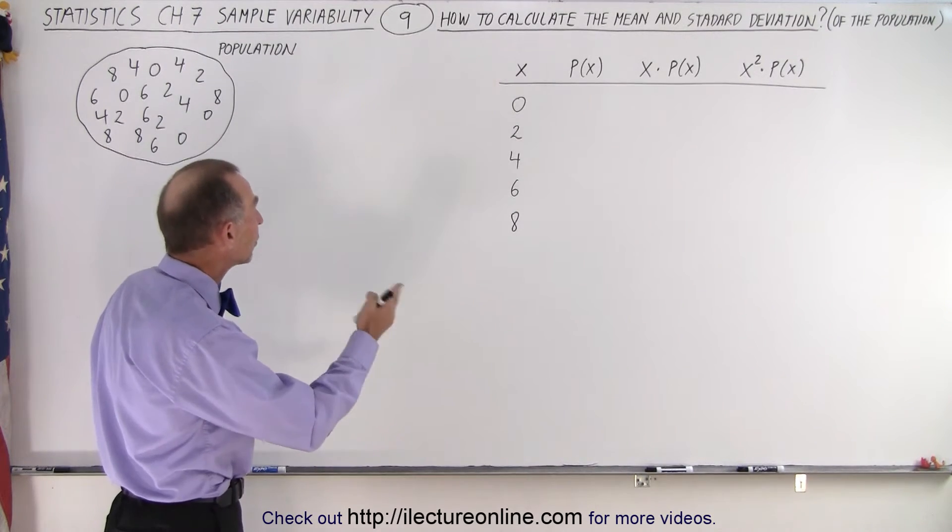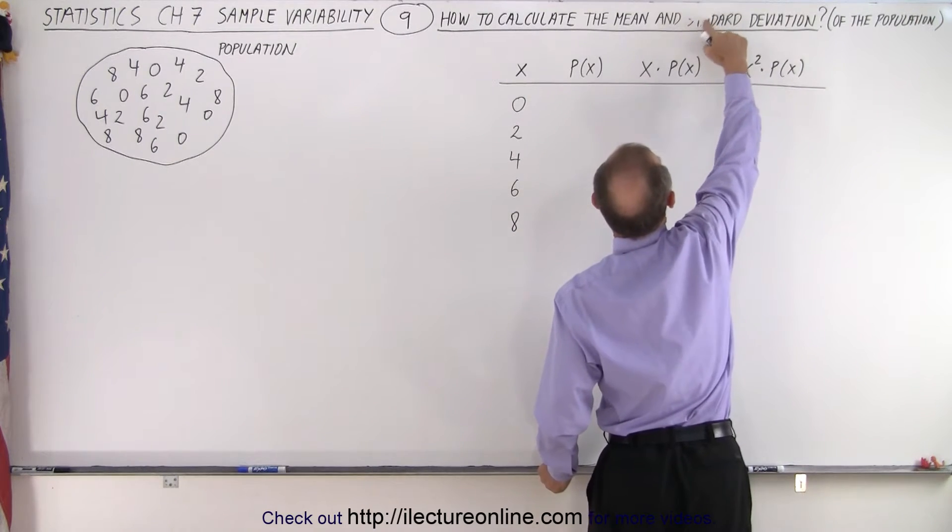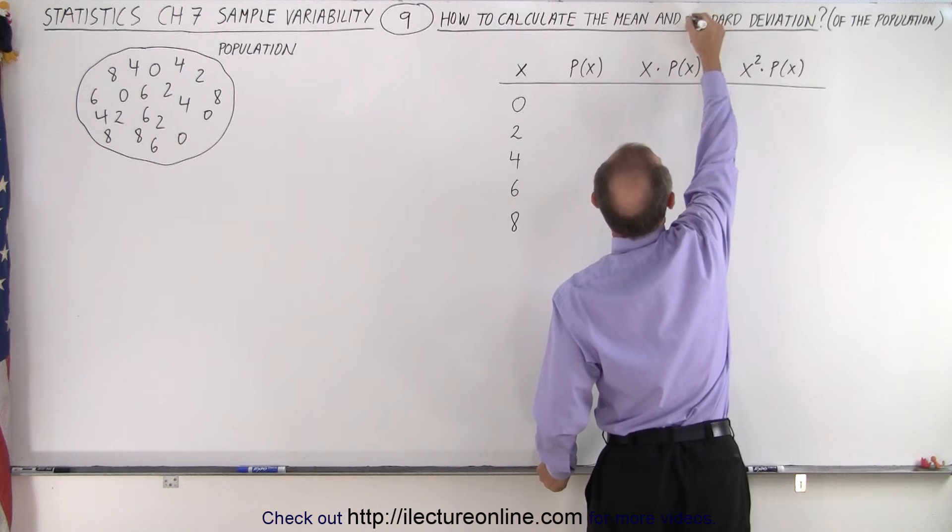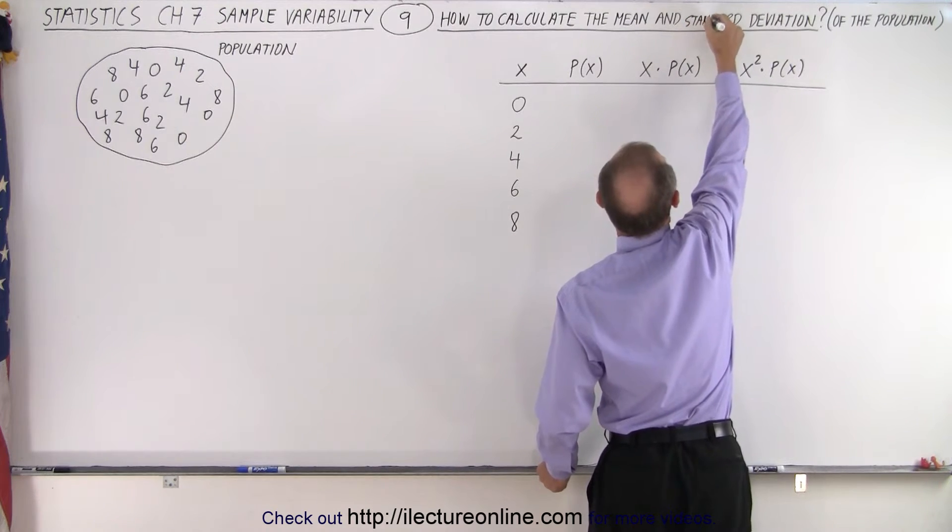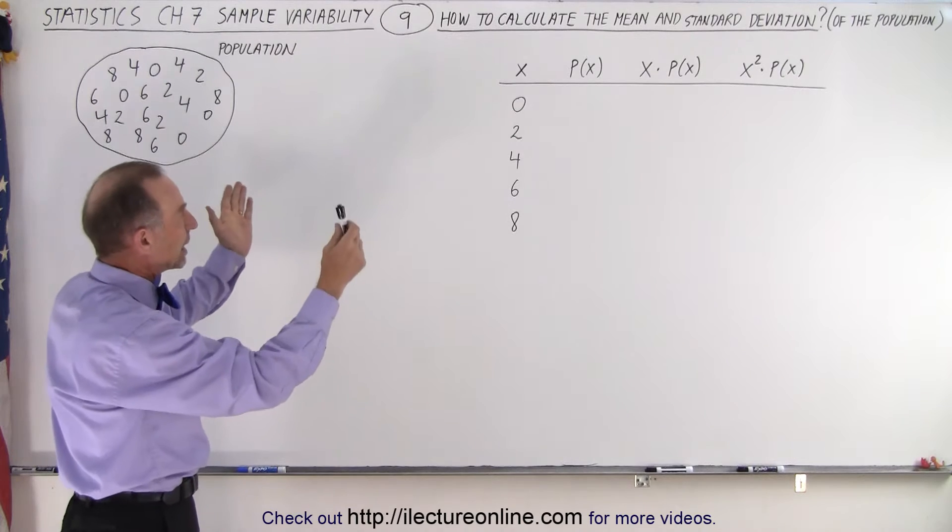So how do we calculate the mean and the standard? And I just realized I'm missing an N in here, so this should say standard. There we go, standard deviation of the population. Well, I have a table ready.